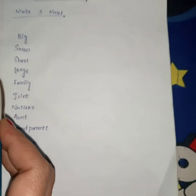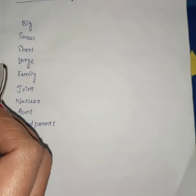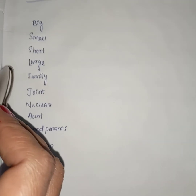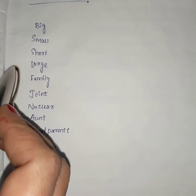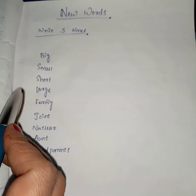ओ वाला तुम्हारा होमवर्क है — तुम 5-5 बार new words को copy में सुन्दर handwriting में लिखना। जब स्कूल खुलेगा मैं देखूंगी। धन्यवाद।